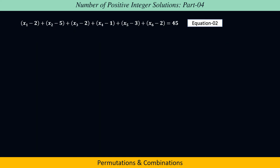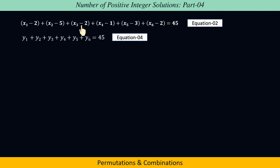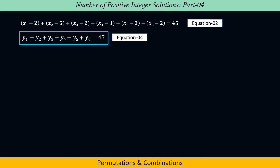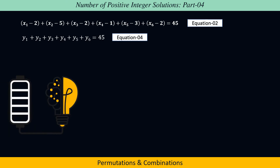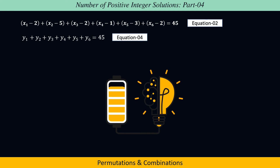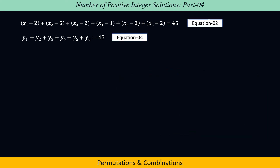To solve equation 2, let us assume y1 = x1 − 2, y2 = x2 − 5, y3 = x3 − 2, y4 = x4 − 1, y5 = x5 − 3, and y6 = x6 − 2, in order to find non-negative integer solutions of the equation y1 + y2 + y3 + y4 + y5 + y6 = 45, which we consider as equation 4. The number of non-negative integer solutions of equation 2 equals the number of non-negative integer solutions of equation 4.